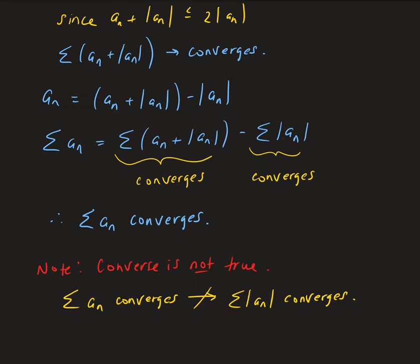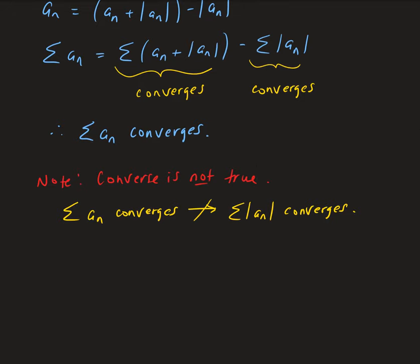Here's an example. Let's say we have the series from 1 to infinity of (−1)^(n+1) over n. This is an alternating series — for n equals 1 you get 1, for n equals 2 you get −1/2, for n equals 3 you get 1/3, and so on. It can be shown that this series converges using the alternating series test.